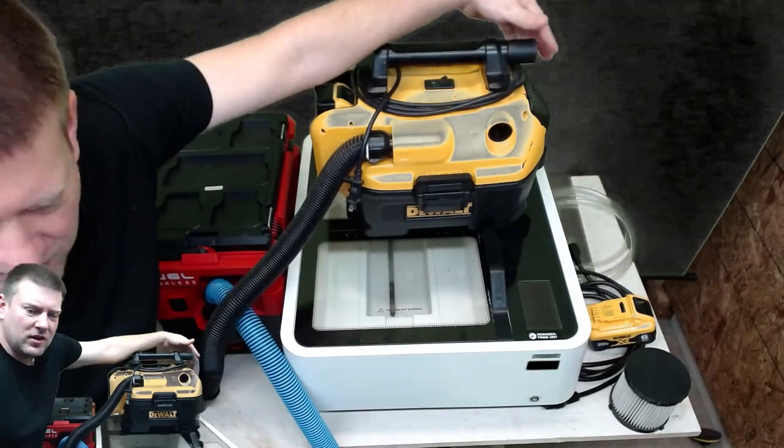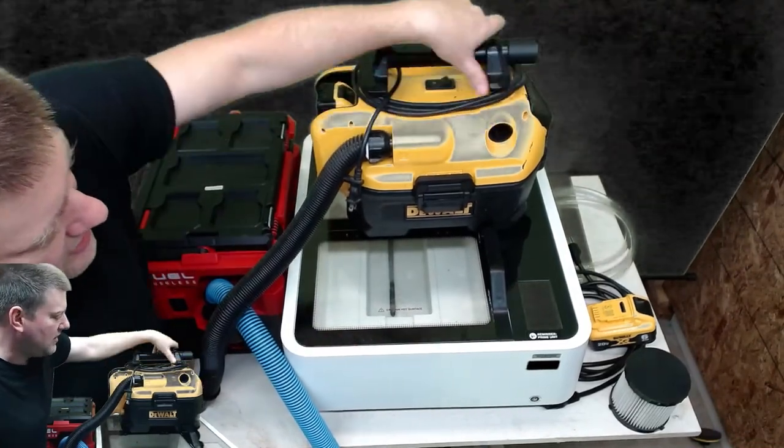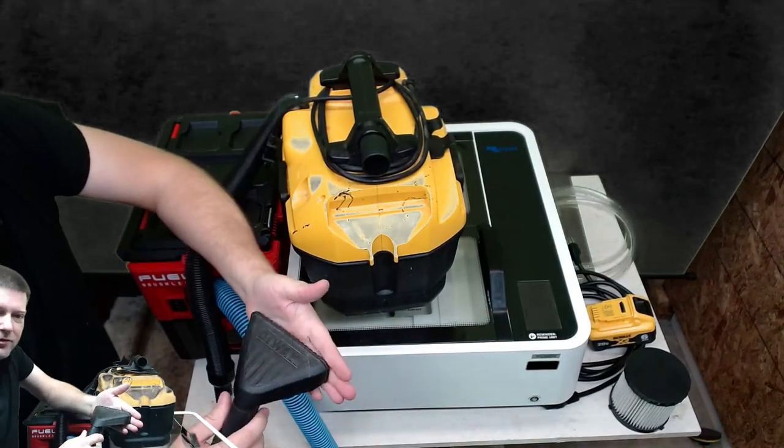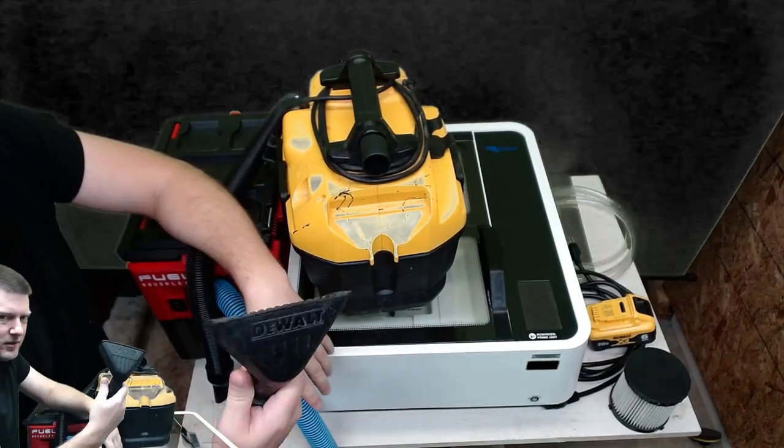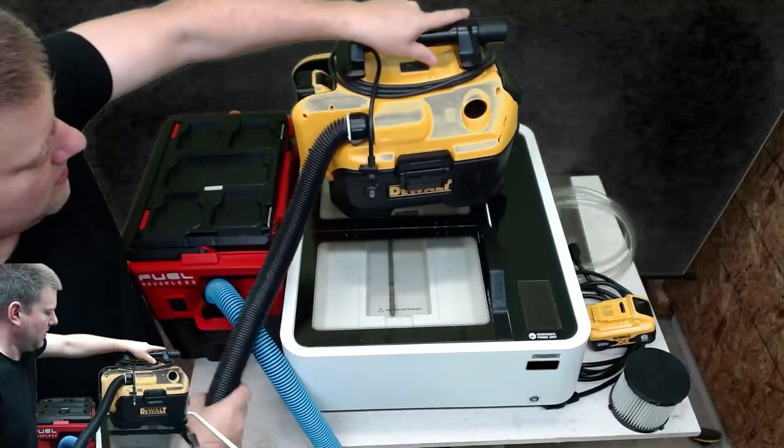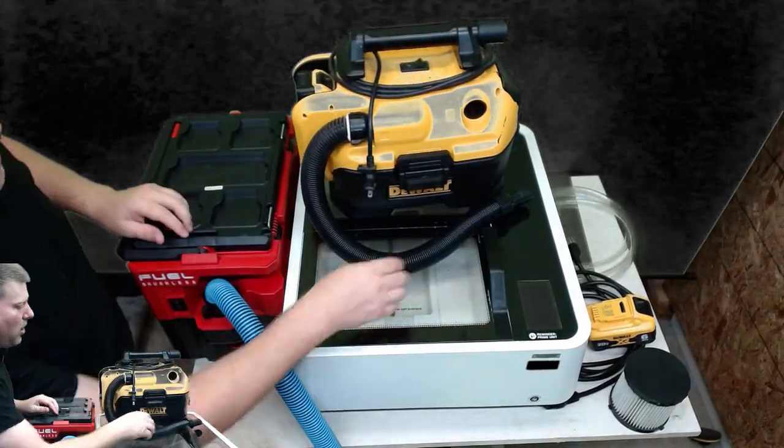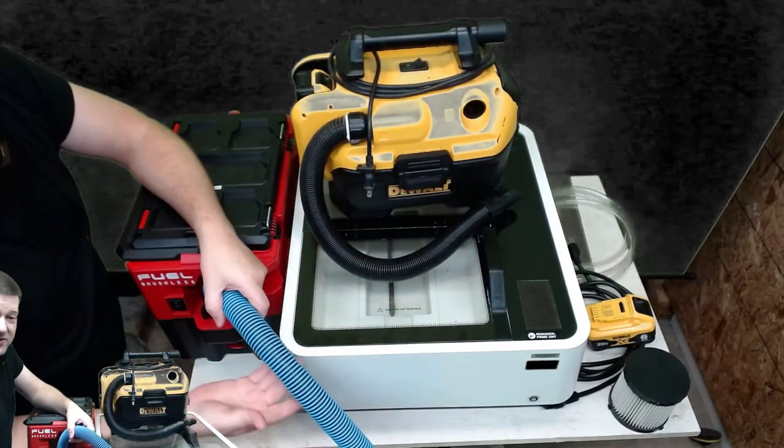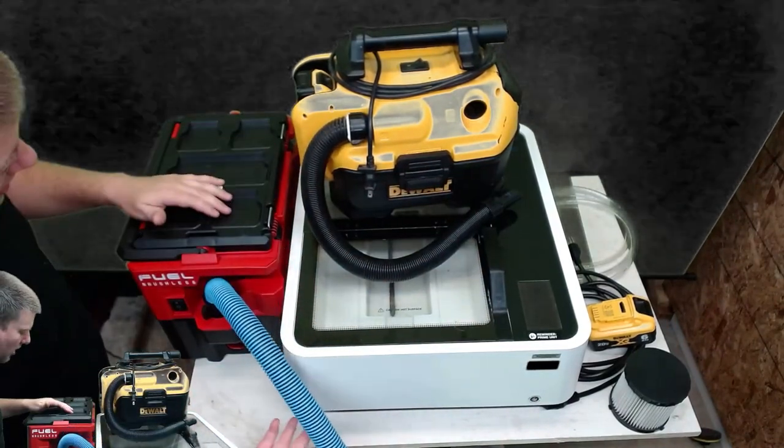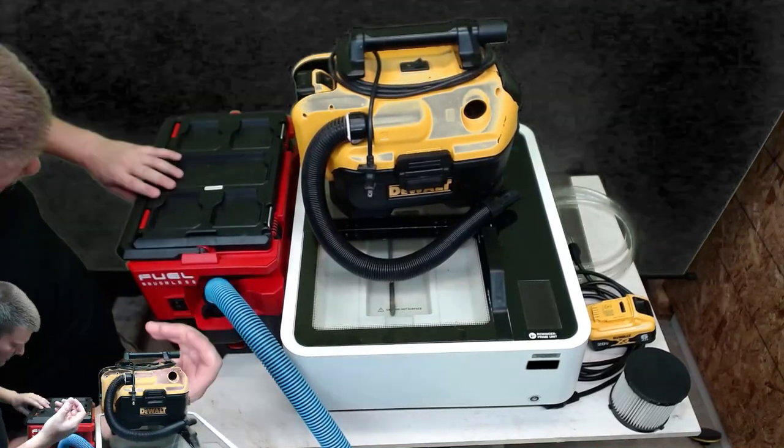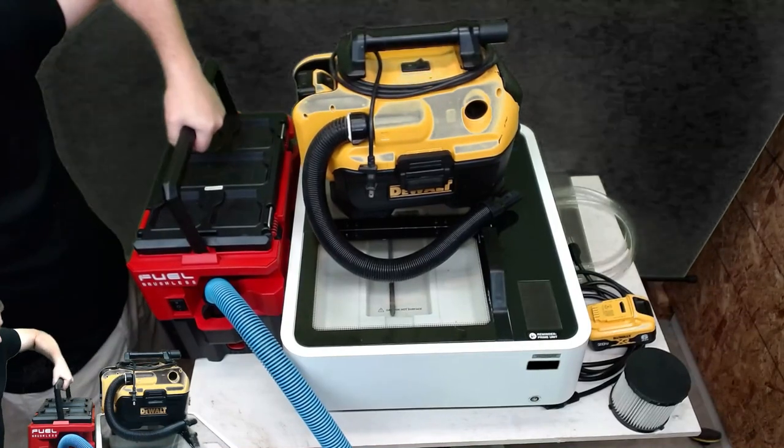The DeWalt's got onboard storage here, and this floor suction tool - if you're doing liquids, this is such a big plus. Got a very flexible hose with a dual tip. I've replaced the hose on my Milwaukee. Very nice carrying handle on both.